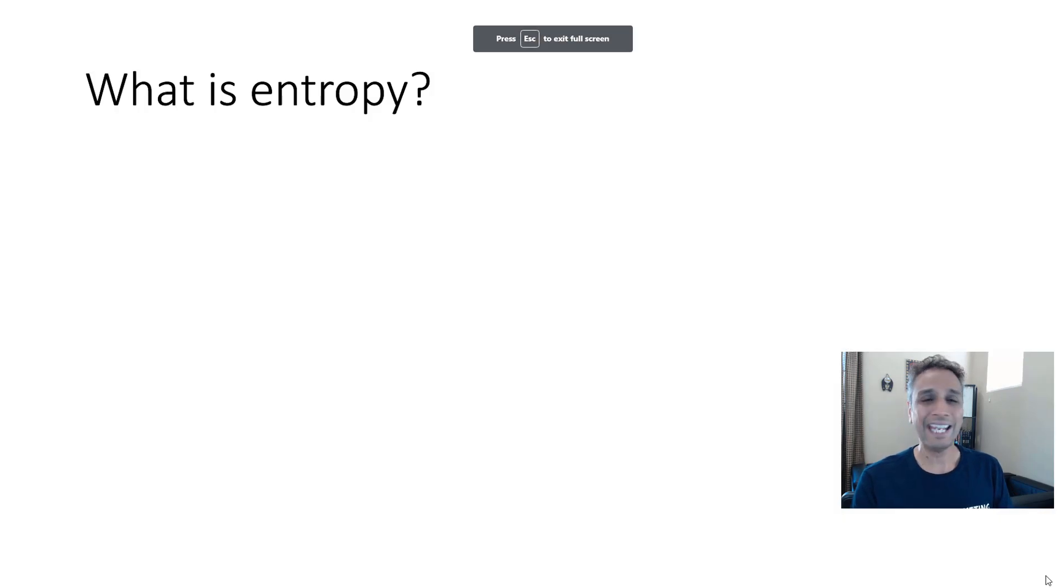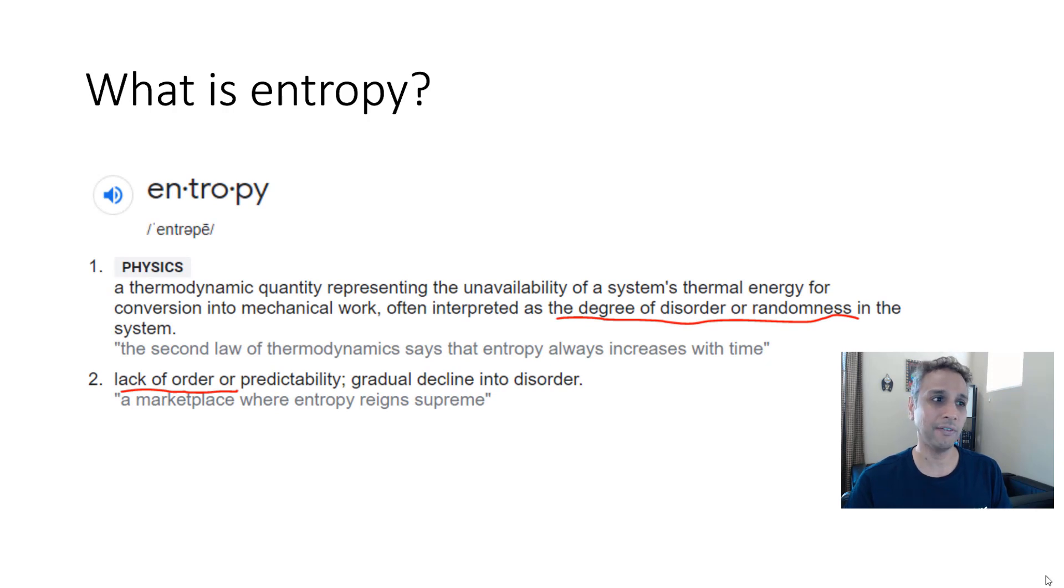First of all, what is entropy? If you come from a physics background or if you have taken basic physics courses, you probably heard the term entropy. But the clear English definition is, if you look up the dictionary, there are two: a physics definition and an English definition. Both of them refer to the degree of disorder or randomness. It's a lack of order. So remember this.